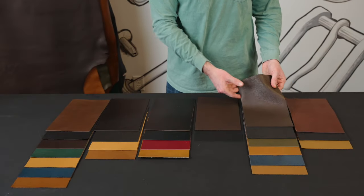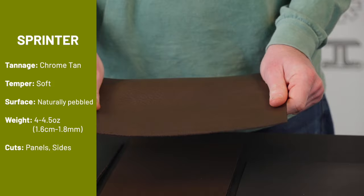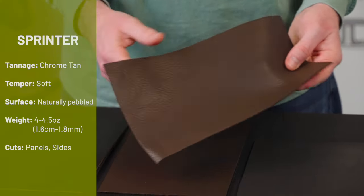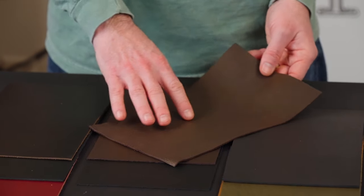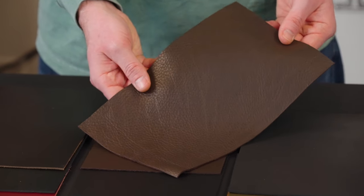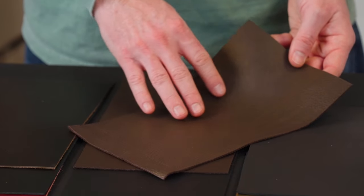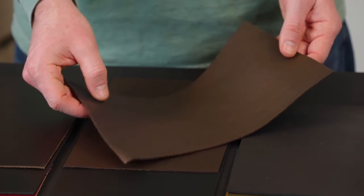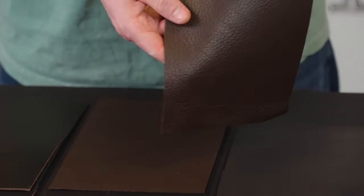Next is the Sprinter. The Sprinter is both shrunken and tumbled, so it has a soft temper similar to the Paris, but the grain pebbling is more pronounced. Since it is shrunken, that pebbling is natural, so it can be inconsistent throughout the grain of the leather. It's four and a half to five ounces.